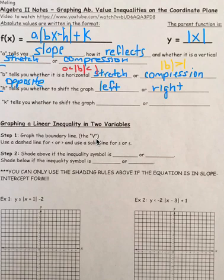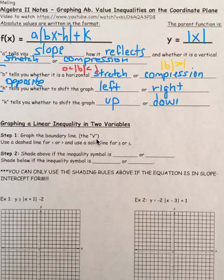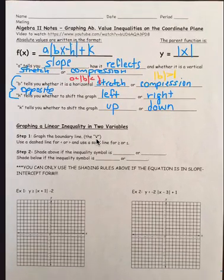'k' tells you whether to shift the graph up or down, and it stays the same. So we like k values — they're reliable, they do what you think they're going to do.